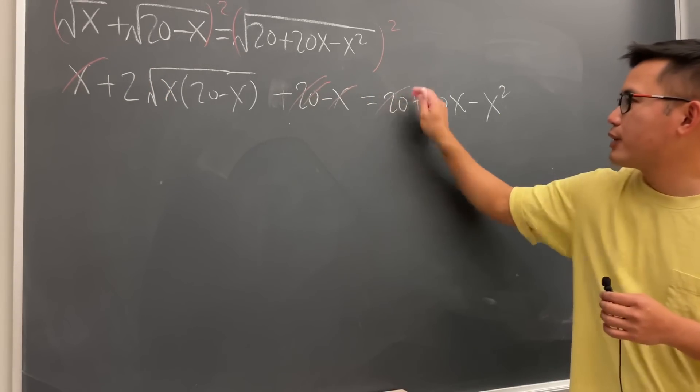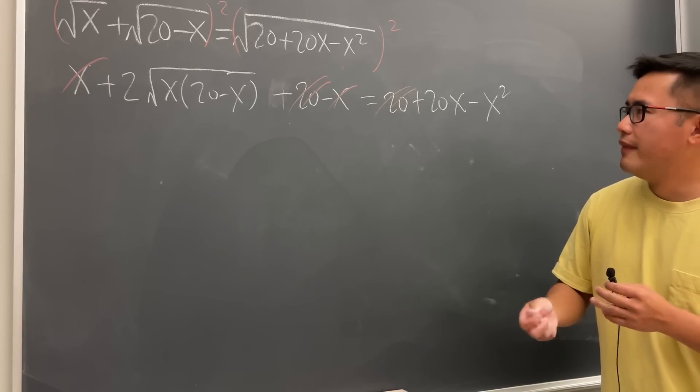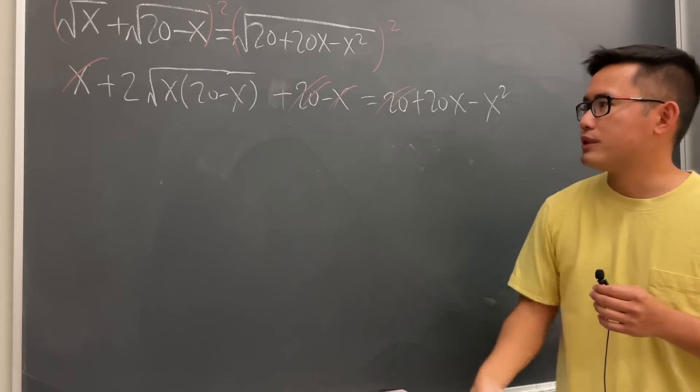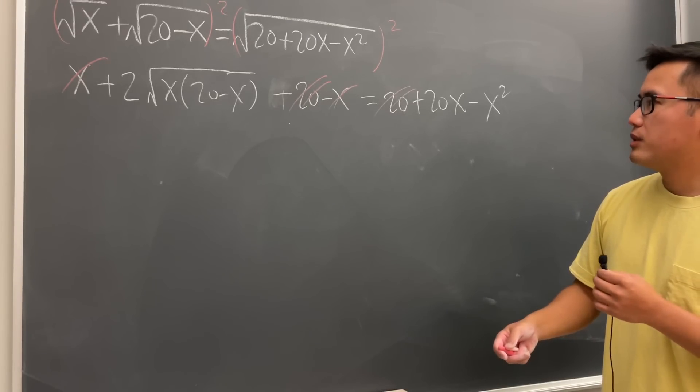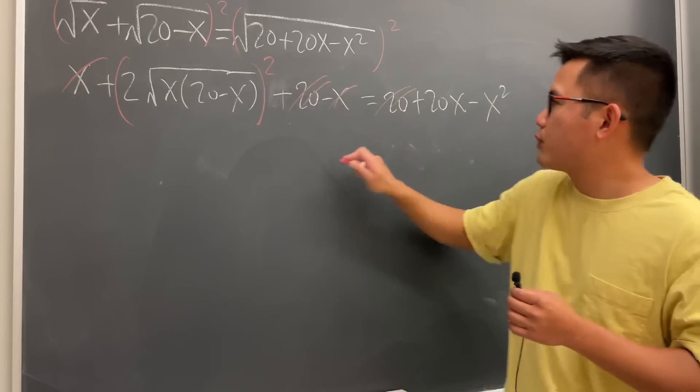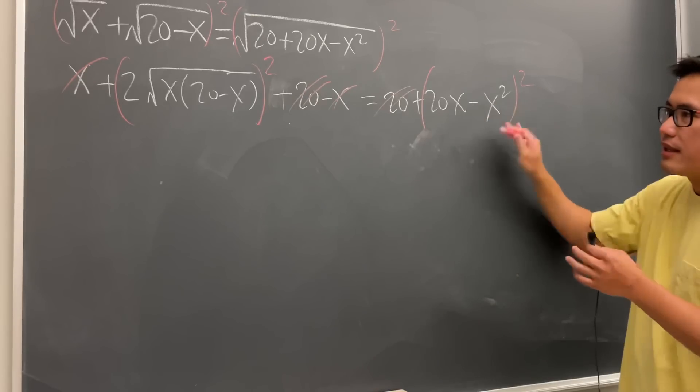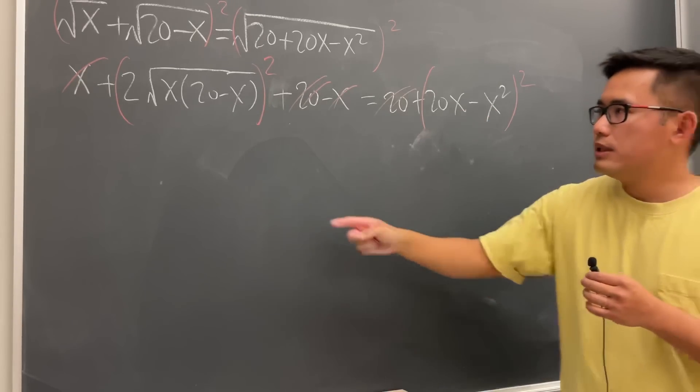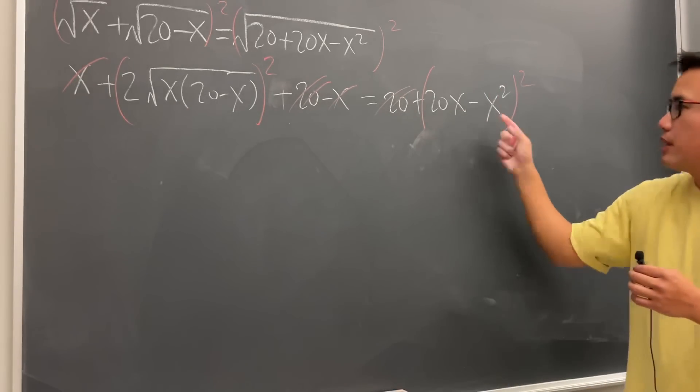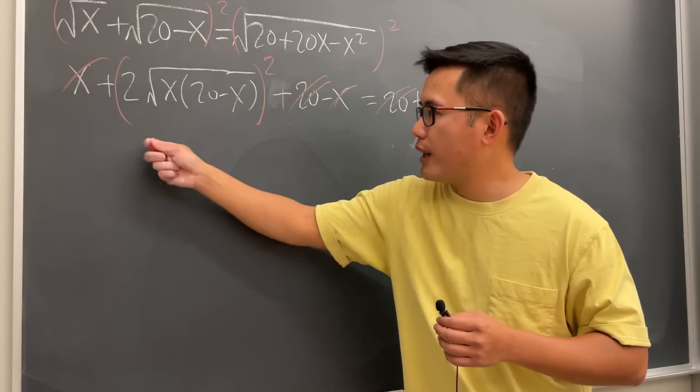Because x and x cancel. Here we have 20, and that 20 also cancel out. Now, we will have to get rid of that square root. Let's just go ahead and square both sides. But if you look at this, if I square both sides here and also just square both sides here - square this side, that side here - notice that the input here is actually quite similar.